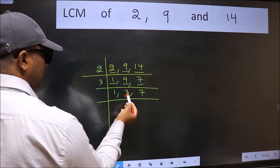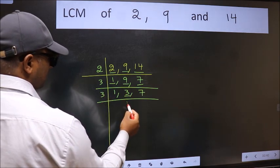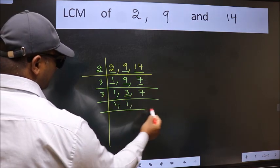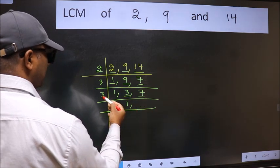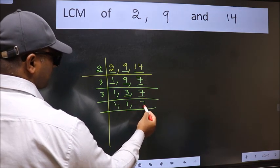Now here we have 3. 3 is a prime number. So 3 into 3. The other number 7 not divisible by 3, so we write it down as it is.